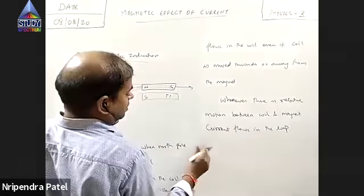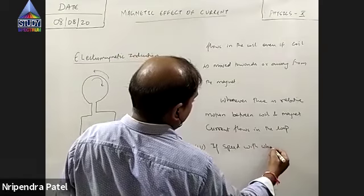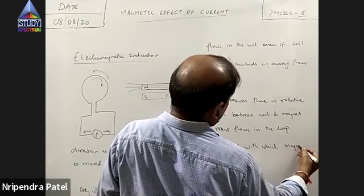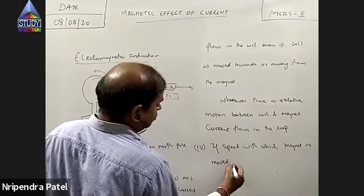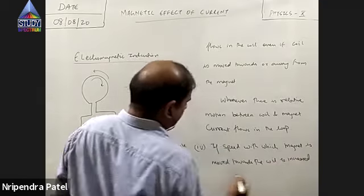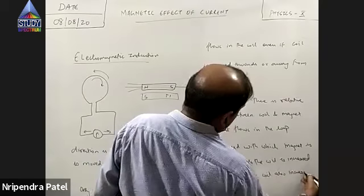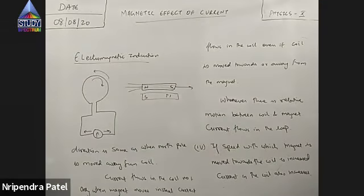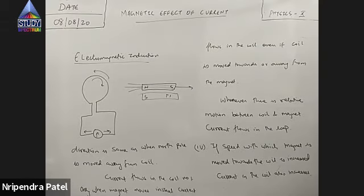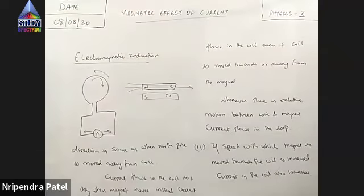Now a core observation: if the speed with which the magnet is moved towards the coil is increased, the current in the coil also increases. If the magnet is moved at a low speed towards the coil, the induced EMF is less, but if the magnet is moved at a high speed towards the coil, the current in the coil increases.